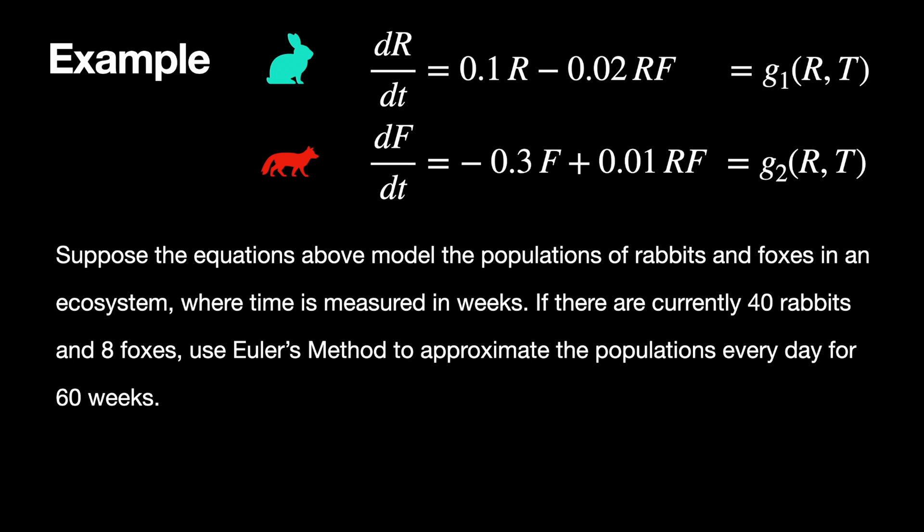Let's see how this works. Here we have the Lotka-Volterra equations and I've gone ahead and substituted in values for those parameters. What we want to suppose is that these equations model rabbits and foxes in an ecosystem where time is measured in weeks. If there are currently 40 rabbits and 8 foxes, let's use Euler's method to approximate the populations every day for 60 weeks. Read through this again and identify the initial conditions. What you should have found is that the initial conditions come from the piece of information that tells us that we have 40 rabbits and 8 foxes. So 40 and 8 will be our jumping off values.